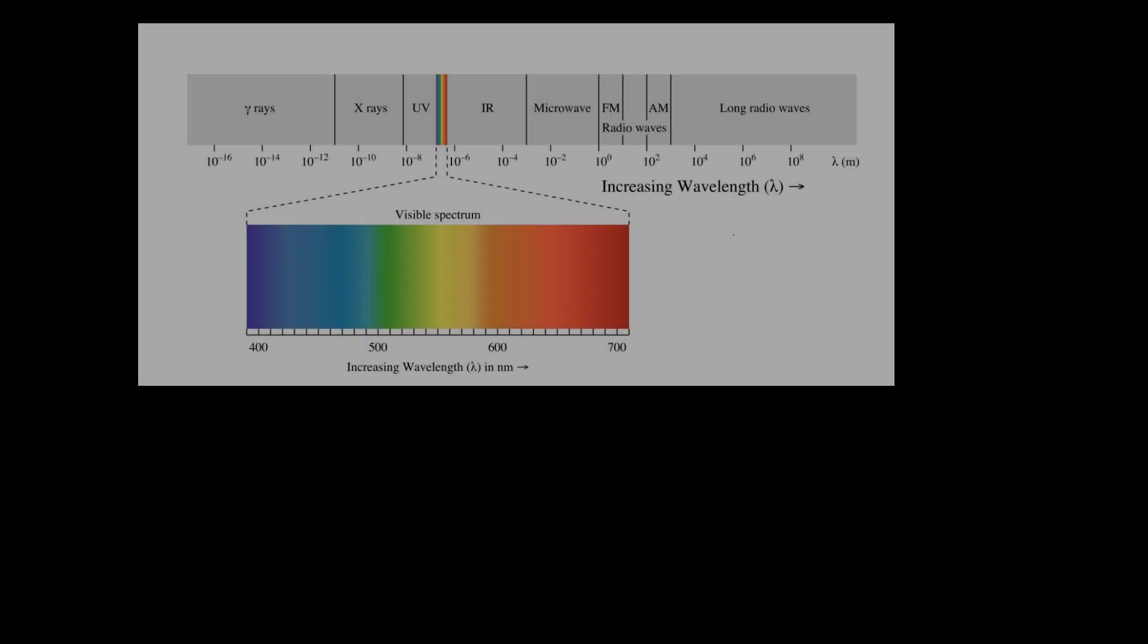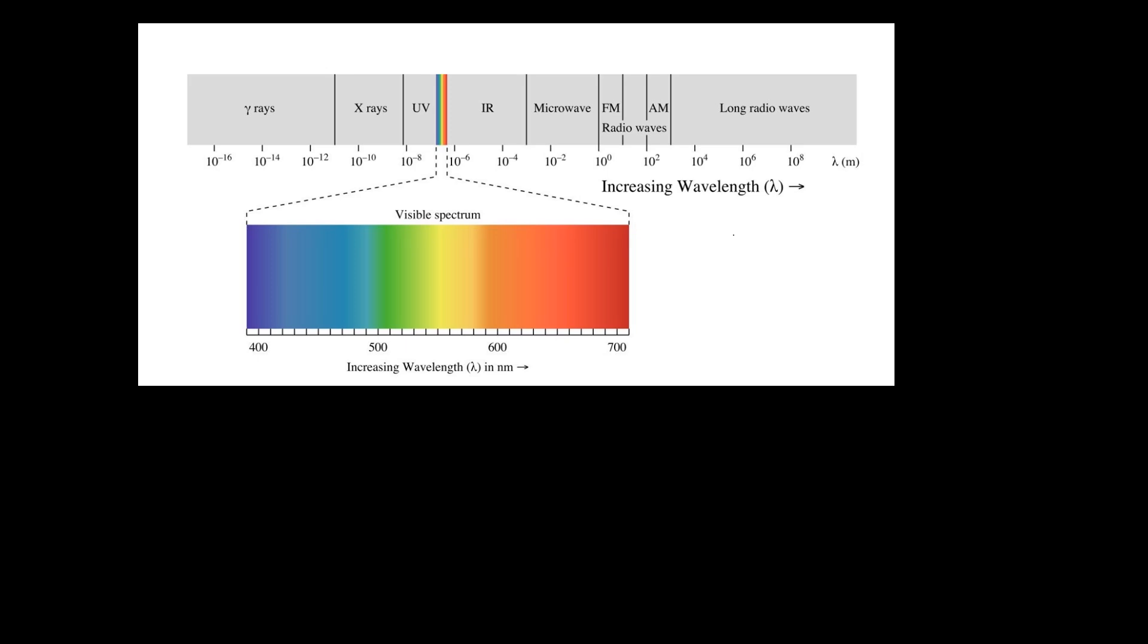Stars emit most of their energy in the visible light, infrared and ultraviolet regions of the spectrum, with energy emitted at other wavelengths making a much smaller contribution. However, some objects emit large amounts of energy at other wavelengths. For example, large black holes are surrounded by disks of matter heated to such high temperatures, millions of degrees Celsius, that they emit large amounts of their energy as X-rays.